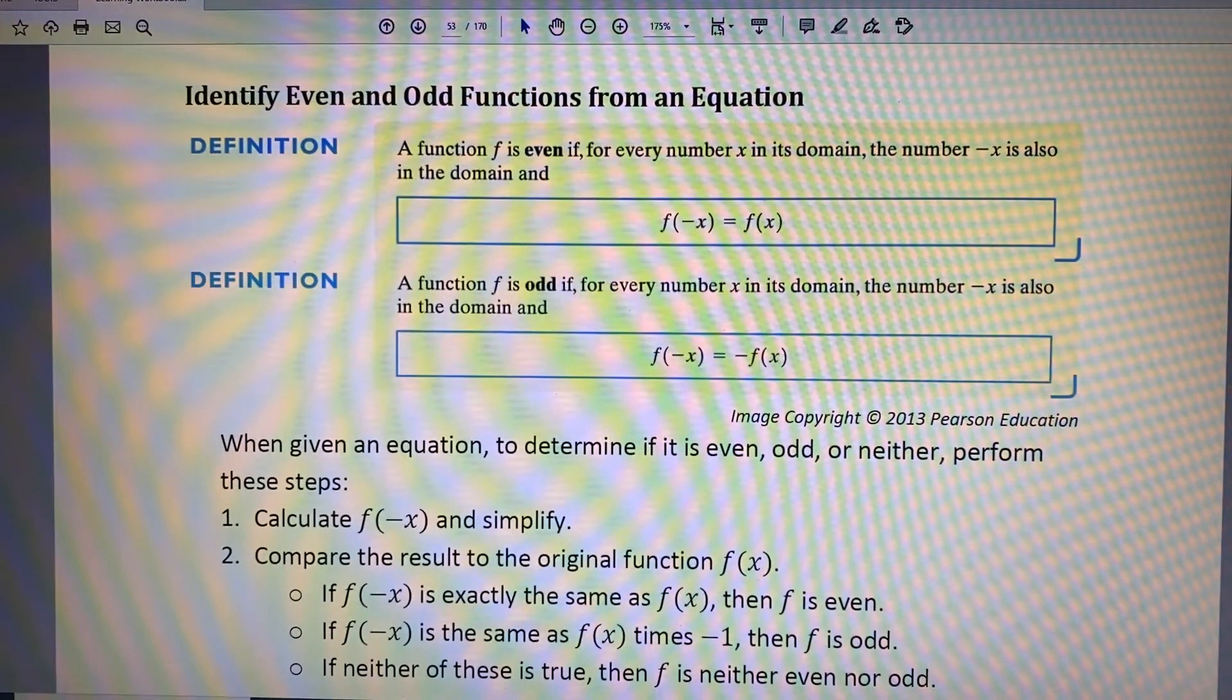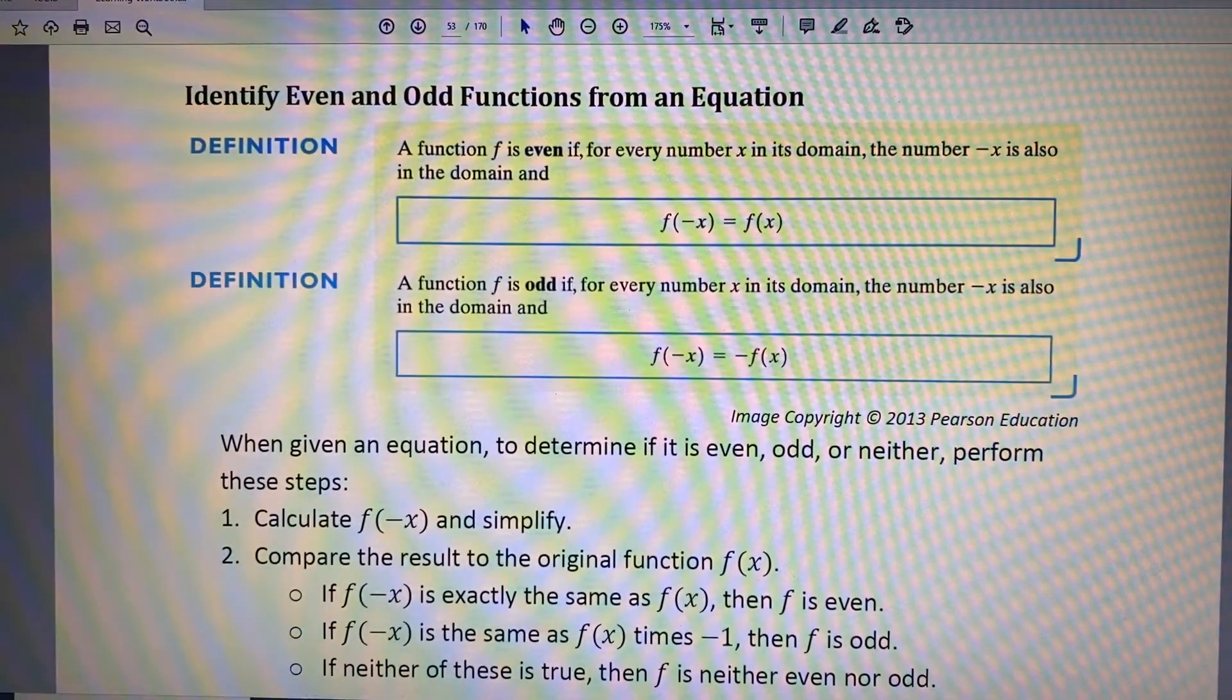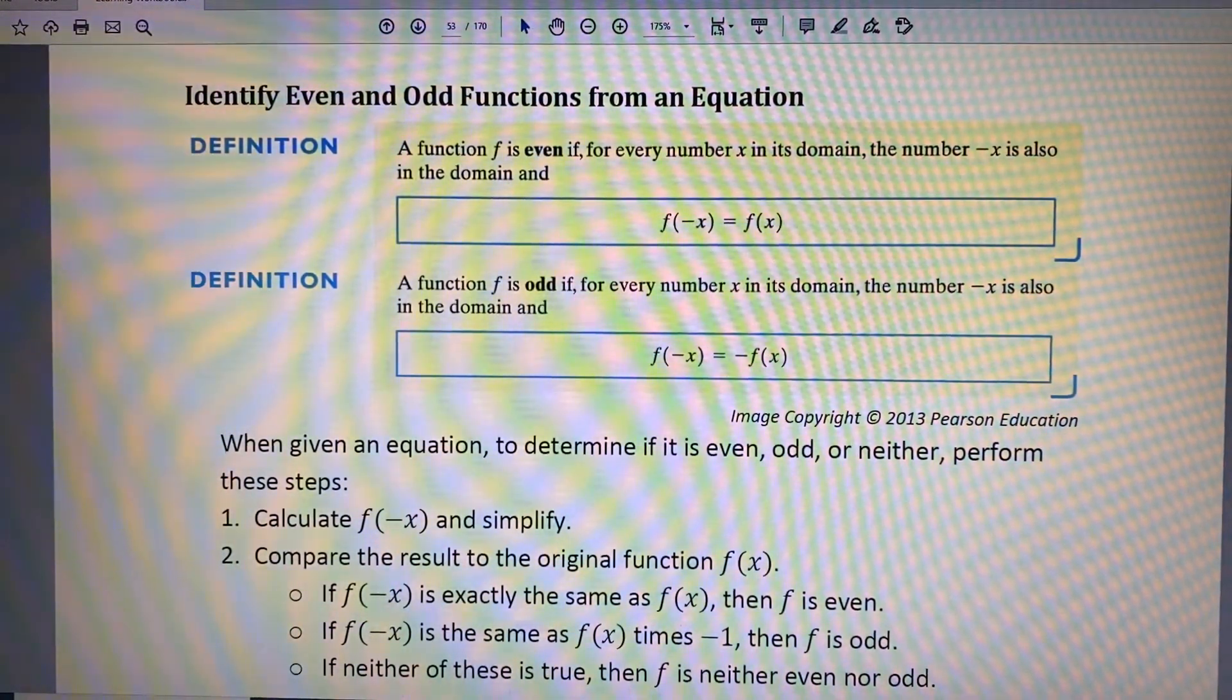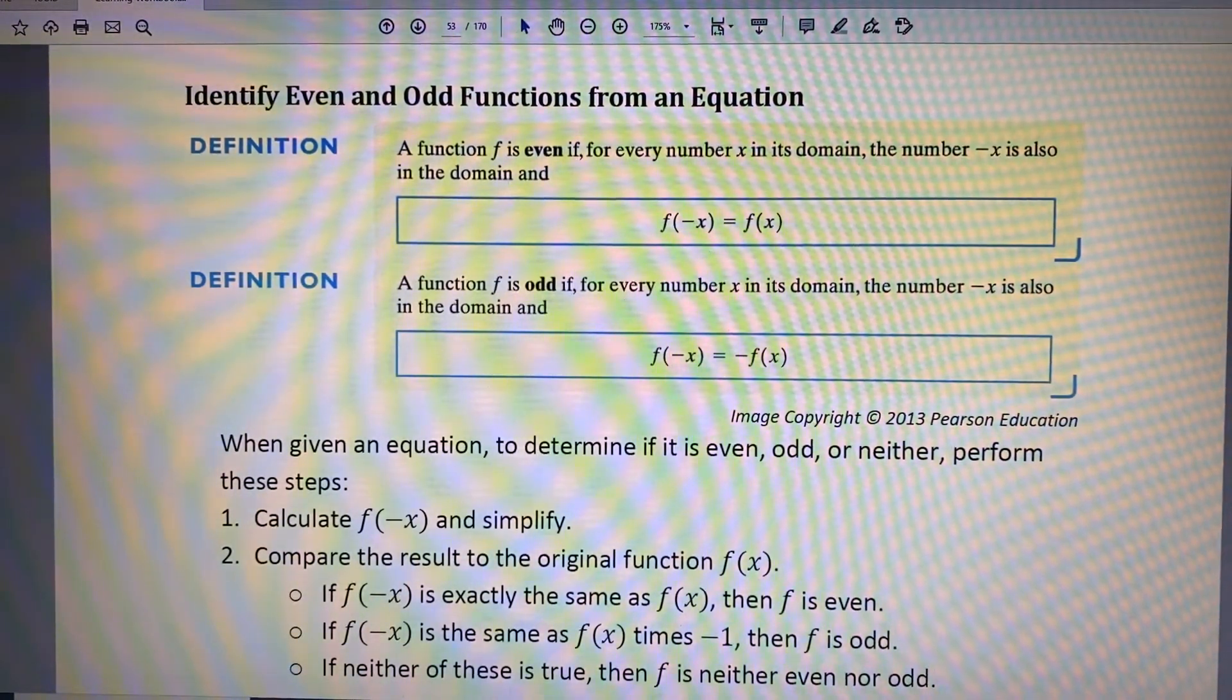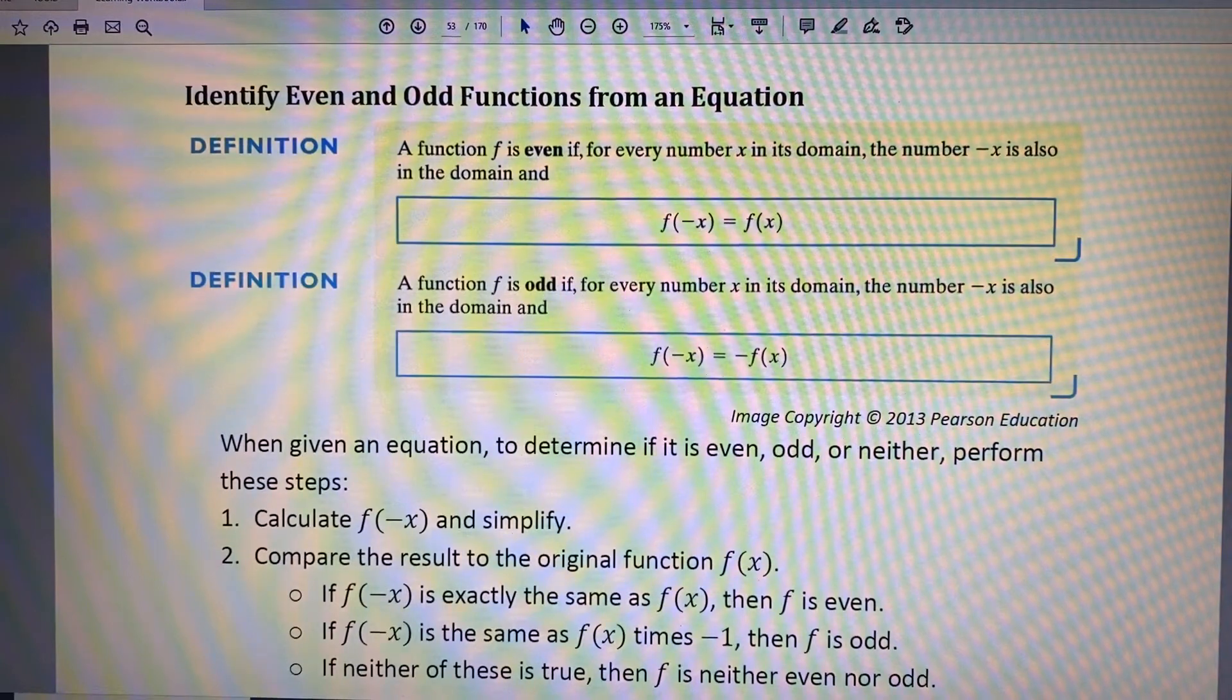A function f is odd if, for every number x in its domain, the number negative x is also in the domain, and f of negative x equals negative f of x.